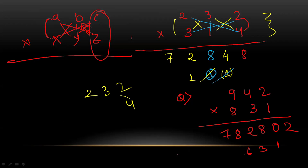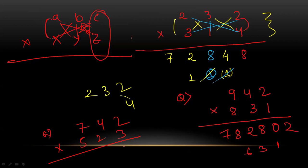Next: 742 into 523. First tell me from the unit digit. That is six, six — no carry. Then twelve plus two is fourteen, so four and carry one.